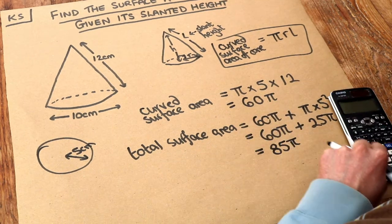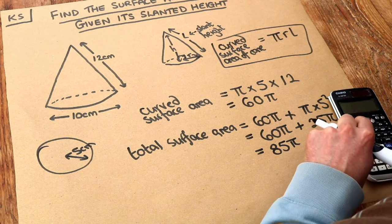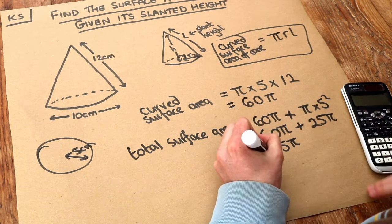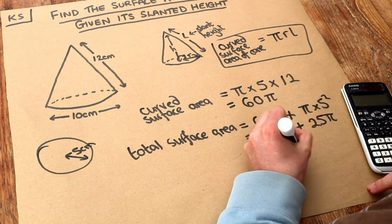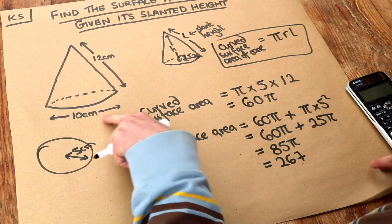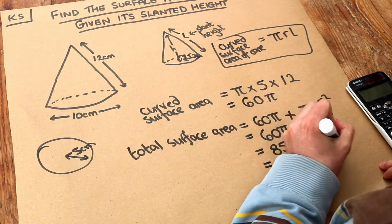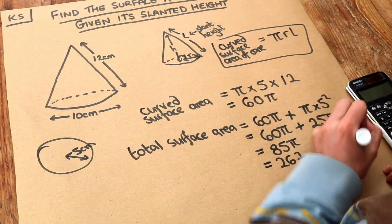Putting 85π into the calculator gives us 267 cm² to three significant figures. That's the final answer.